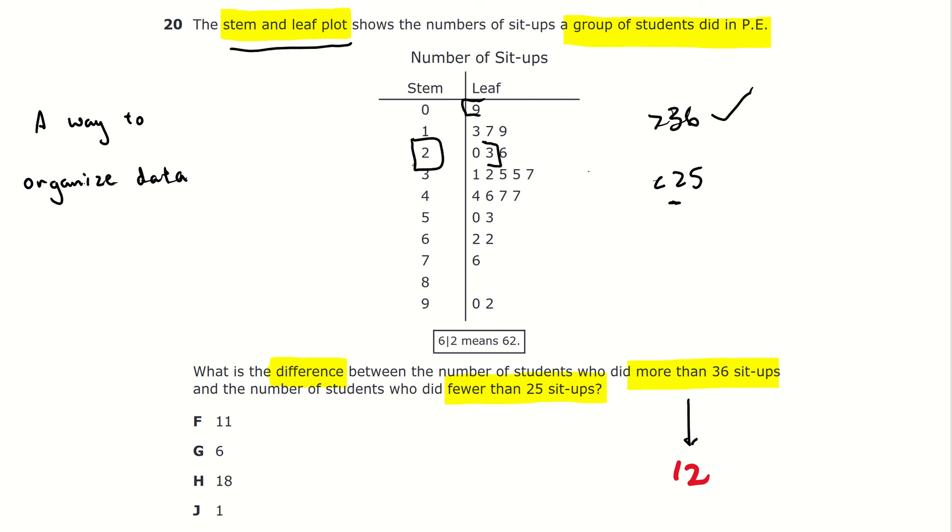Now, since we know where our start and end is, we just count. 1, 2, 3, 4, 5, 6. So, now I know the number of students who did fewer than 25 sit-ups is 6.